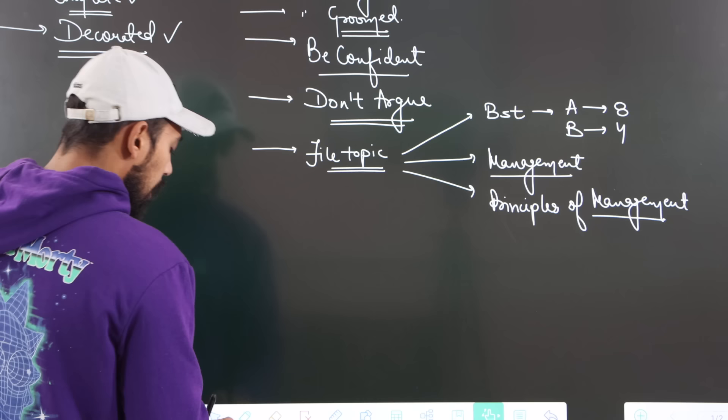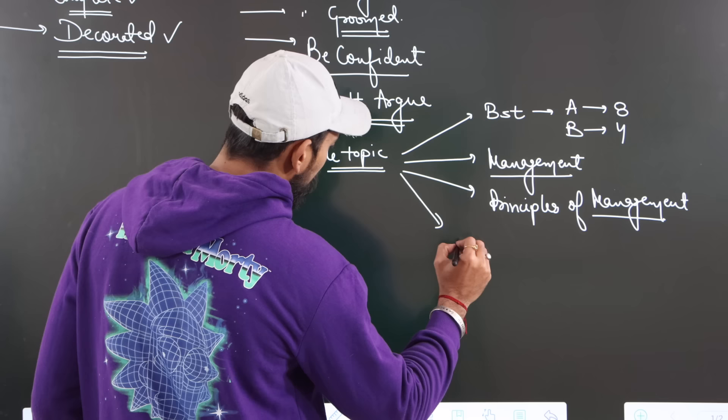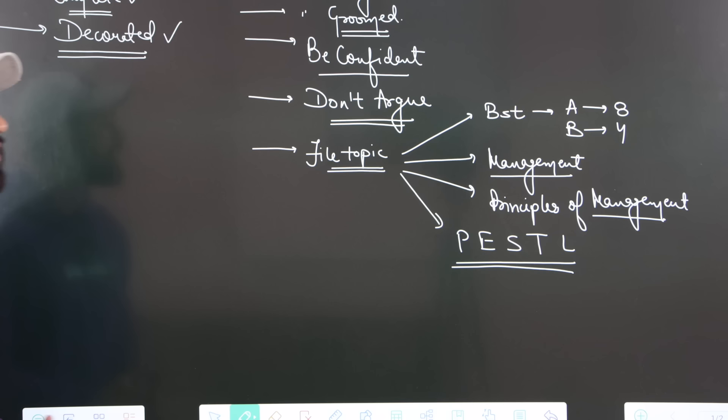In chapter number three, you should know the dimensions of the business environment - political, economic, social, technological and legal.